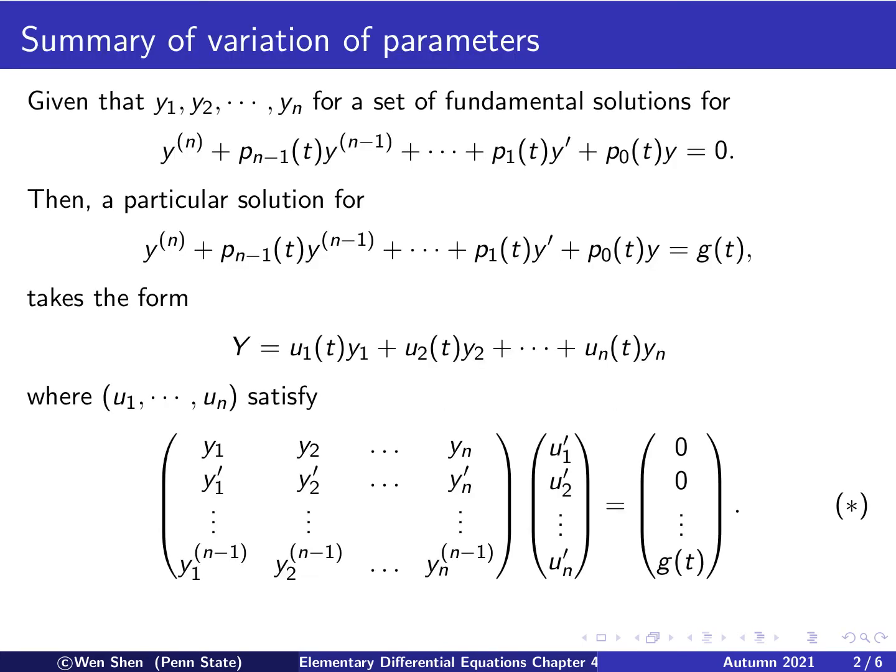In the previous video, video number 4 of chapter 4, we derived the method of variation of parameters for high order equations. If you would like to see the derivations, please watch that video. Here we give a summary, and then we will take a couple of examples.